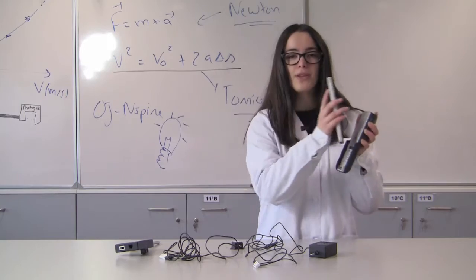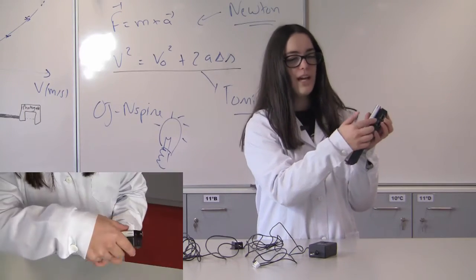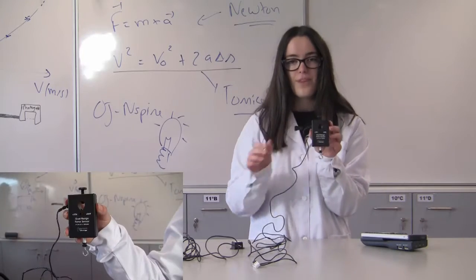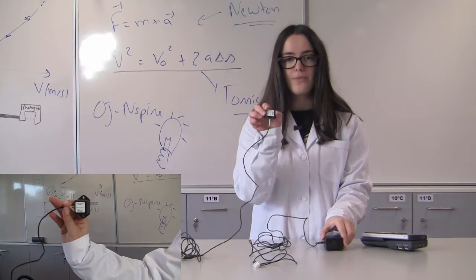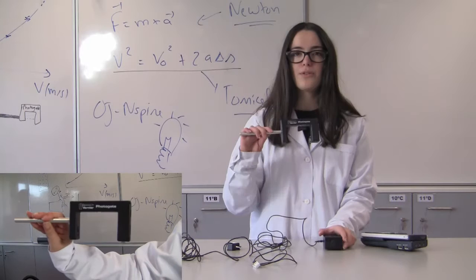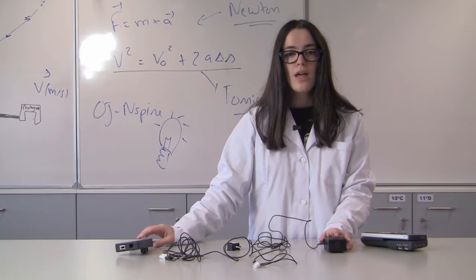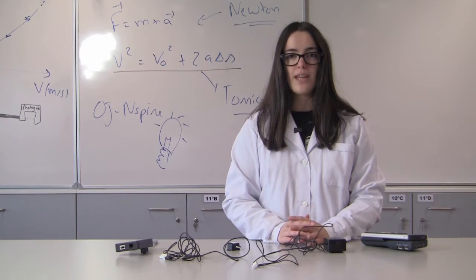Utilizando a LabCradle juntamente com a calculadora, podemos ligar alguns sensores, nomeadamente o sensor de força, o sensor de aceleração e o photogate para medir velocidades, estudando assim algumas colisões em laboratório, de forma a ser possível extrapolar para situações da vida real.